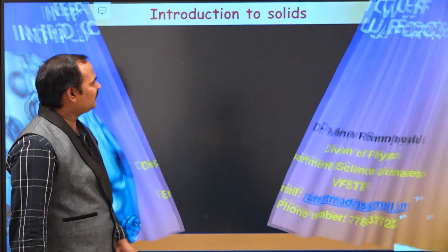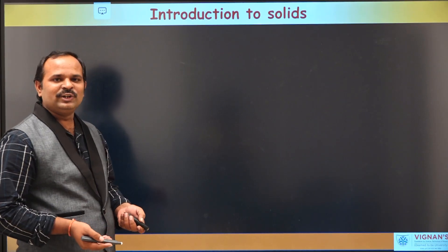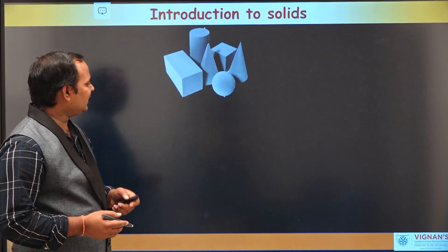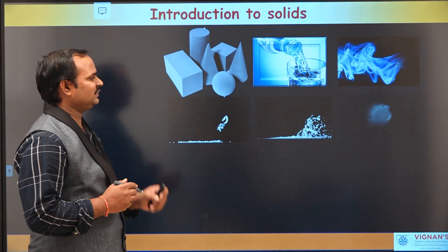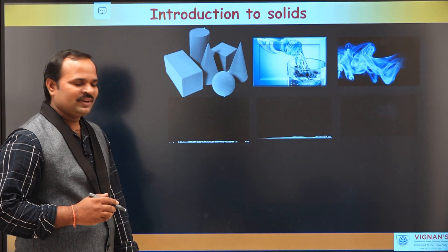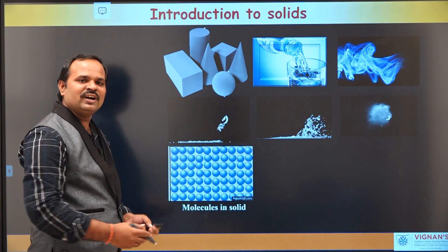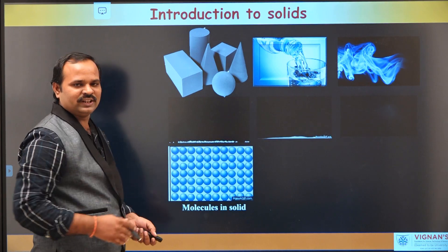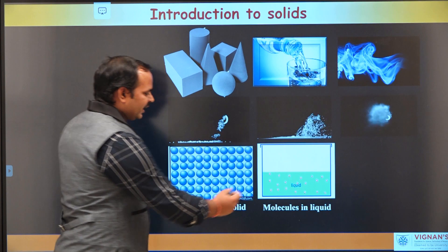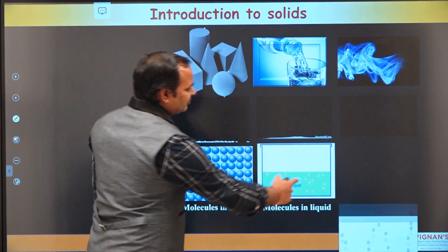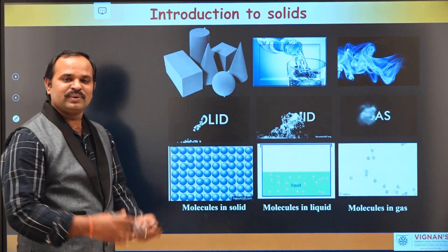As we all know, in the universe the materials are classified into solids, liquids, and gases. As you can see in the picture, the atoms in the solid are tightly bound together. In the case of liquid, they are relatively free. In the case of gases, they are completely free.